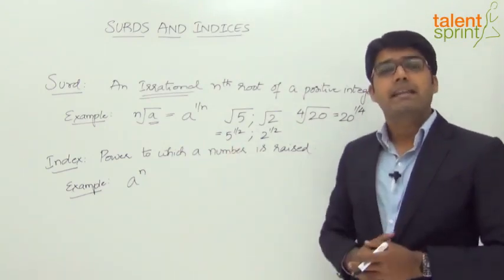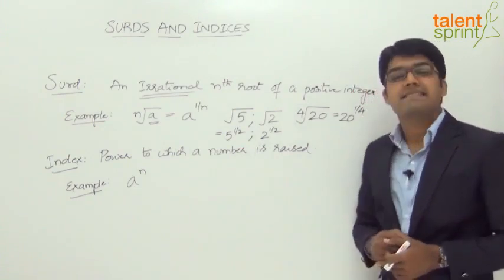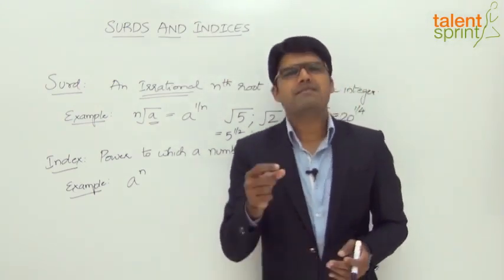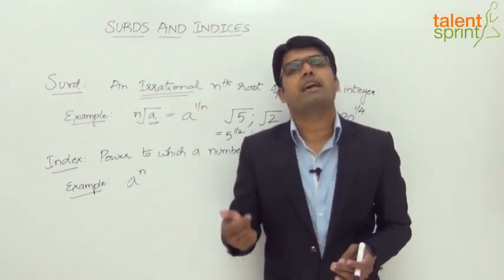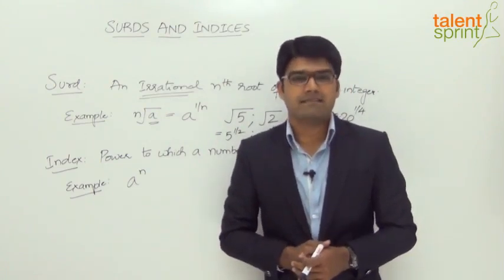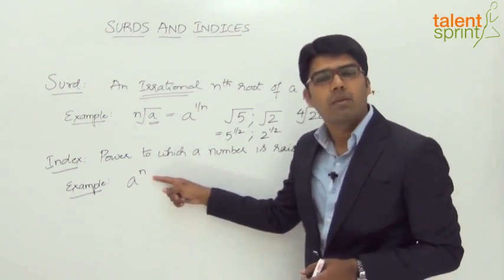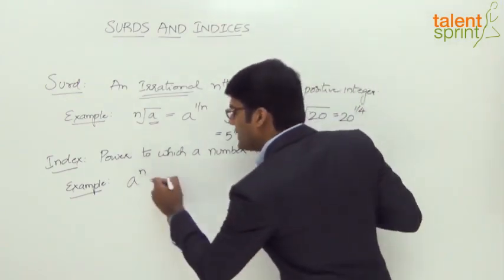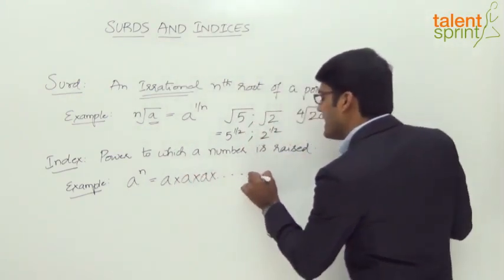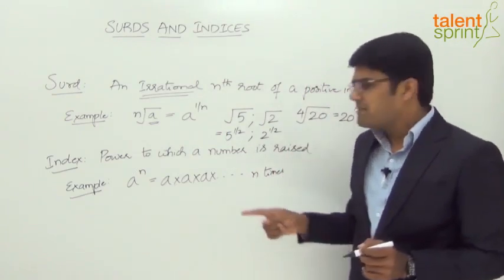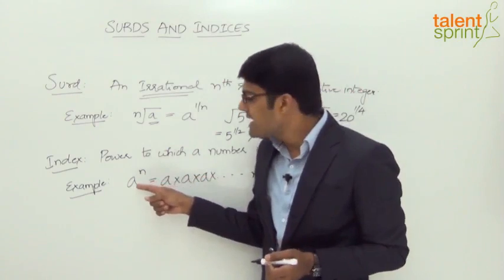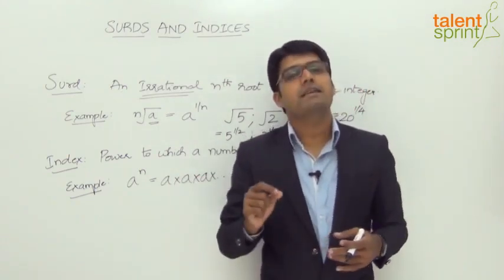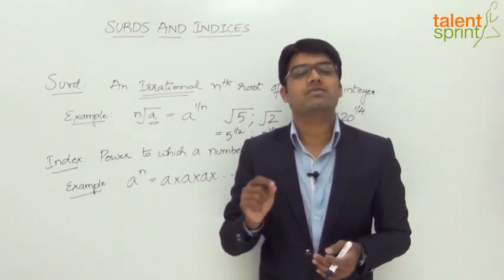Let us now look at index. An index is the power to which a number is raised. When a particular number A is multiplied by itself n number of times, that is what is called an index. So A raised to the power of n means A multiplied by itself n times. A is the base and n is the index. For example, 5 squared: 5 is the base and the power 2 is the index.